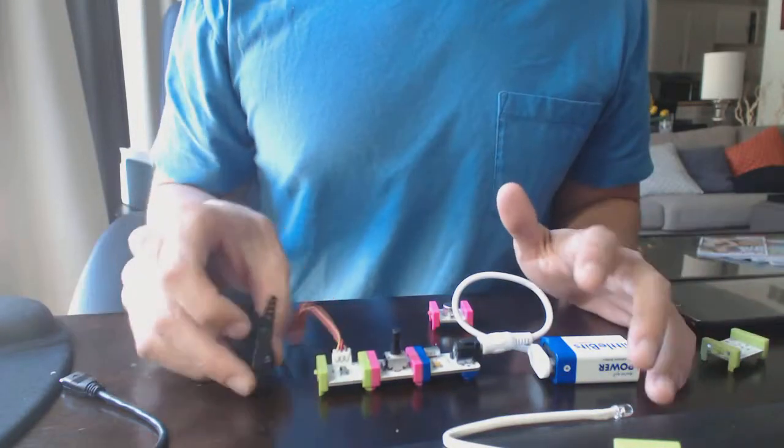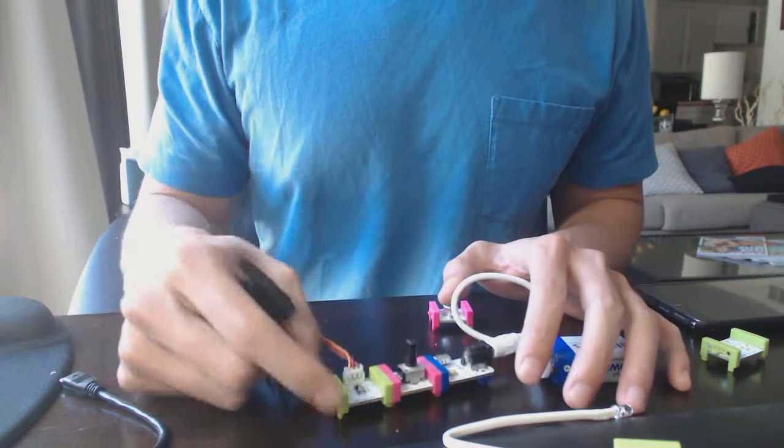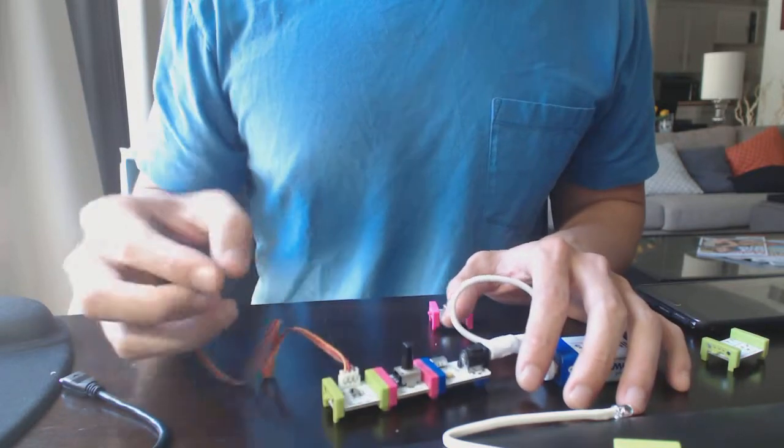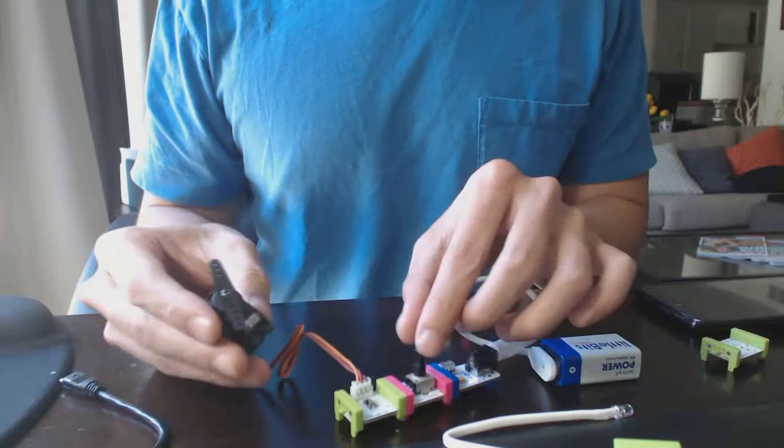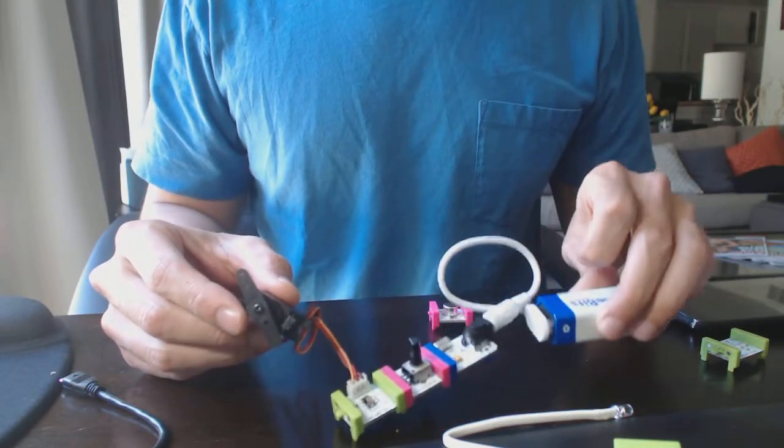Hey guys, I want to give a quick demonstration on the servomotor bit from LittleBits. Here's the servomotor bit. Attached to that we have a dimmer. The dimmer controls the amount of power that goes to the servo bit, and then we have our power module here.